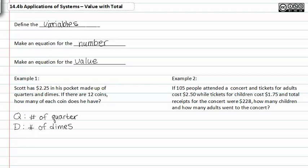Notice that since we know that he has dimes and quarters, and we also know that he has twelve of them, we can write Q plus D equals twelve, because we know that Q is the number of quarters and D represents the number of dimes.